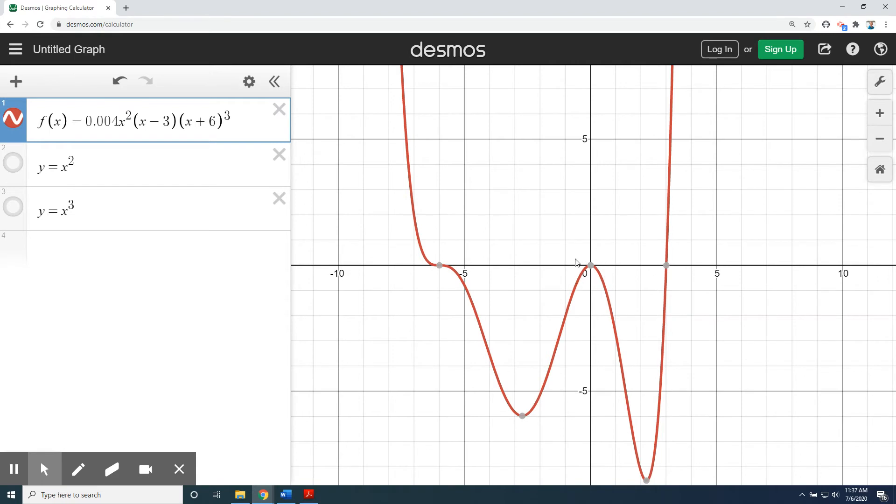At 0, where the multiplicity was 2, an even number, the red curve touches and bounces away. But at negative 6, where the multiplicity was an odd number, and at positive 3, where the multiplicity was an odd number, the red curve crosses the x-axis and keeps going.